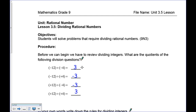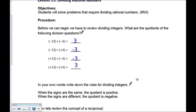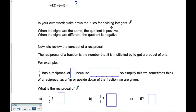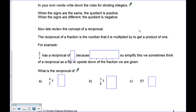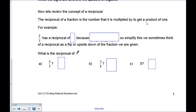These four rules are going to be applied to both fractions and decimals. When the signs are the same, the quotient is positive; when the signs are different, the quotient is negative. Remember, the word 'quotient' is the result of a division question.